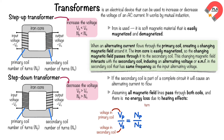Np is the number of turns on the primary coil, and Ns is the number of turns on the secondary coil. The output power will be the same as the input power of the supply.